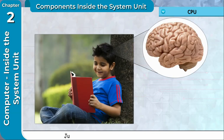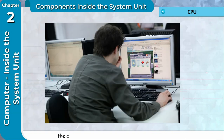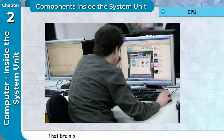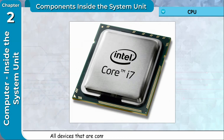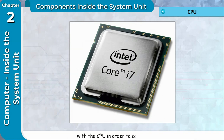CPU: Just like your brain controls every part of your body, the computer also has a brain which controls its every part. That brain of the computer is called Central Processing Unit, CPU. All devices that are connected to the computer first communicate with the CPU in order to carry out a task. CPU is also called Processor or Microprocessor.